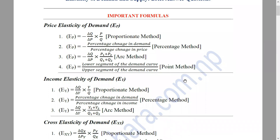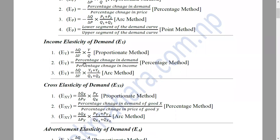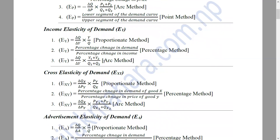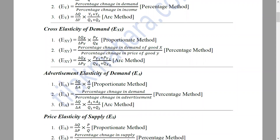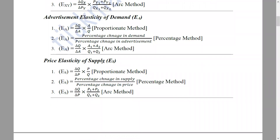We have to keep in mind the price elasticity of demand formula. The income elasticity of demand will also be covered. In the theoretical formula, we can express this to make the final formula. We have two elasticity of demand types. The price of supply uses the proportion method, percentage method, and point method.